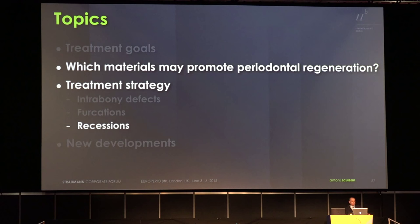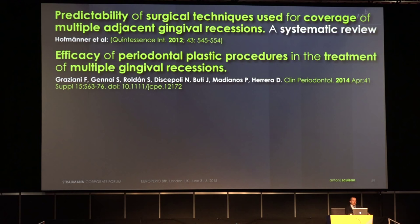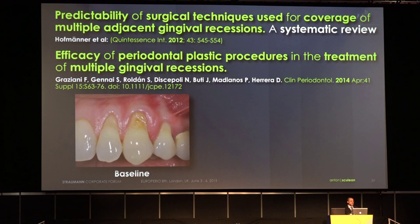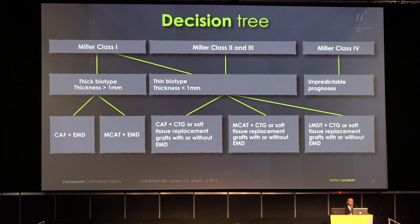What about soft tissue problems — recessions? We have nice systematic reviews for single recessions. I recommend the paper by Francisco Cairo showing that the best materials are the connective tissue graft and enamel matrix proteins in conjunction with the coronally advanced flap. Membranes were not very successful. For multiple recessions there are also nice papers by our group, by Petra Hoffmann, and by Filippo Graziani. Our decision tree: if I have a Miller class 1 recession with a thick biotype — not only the presence of keratinized tissue but tissue thickness — this is a critical issue.